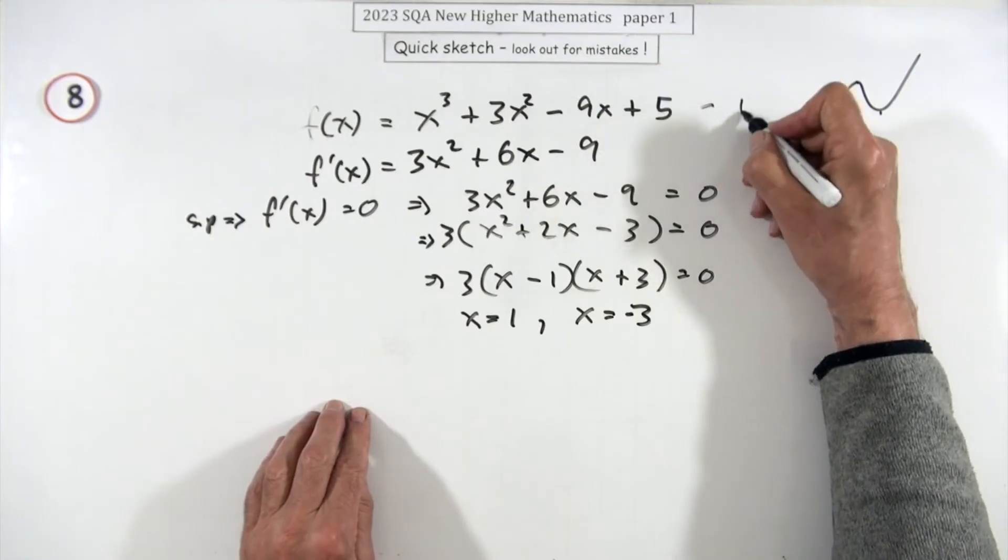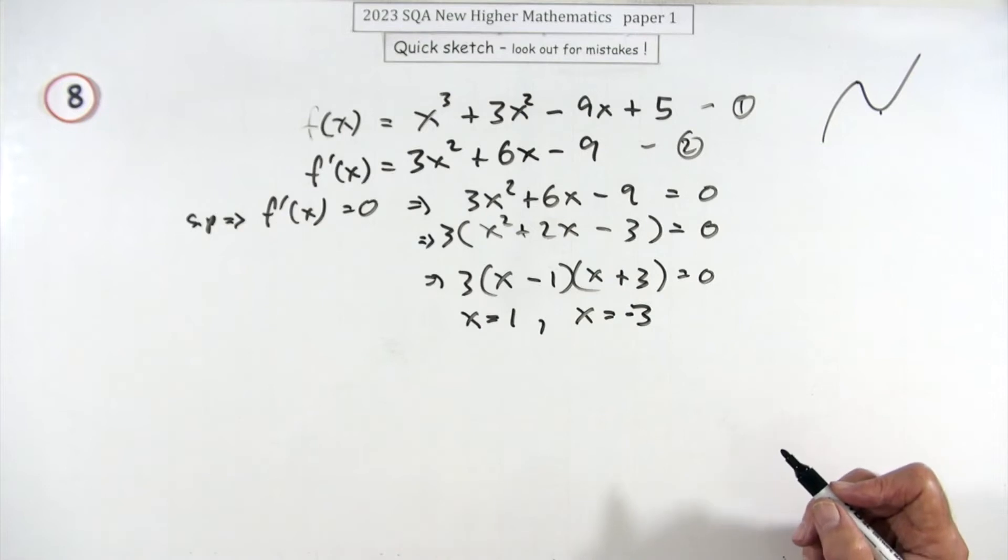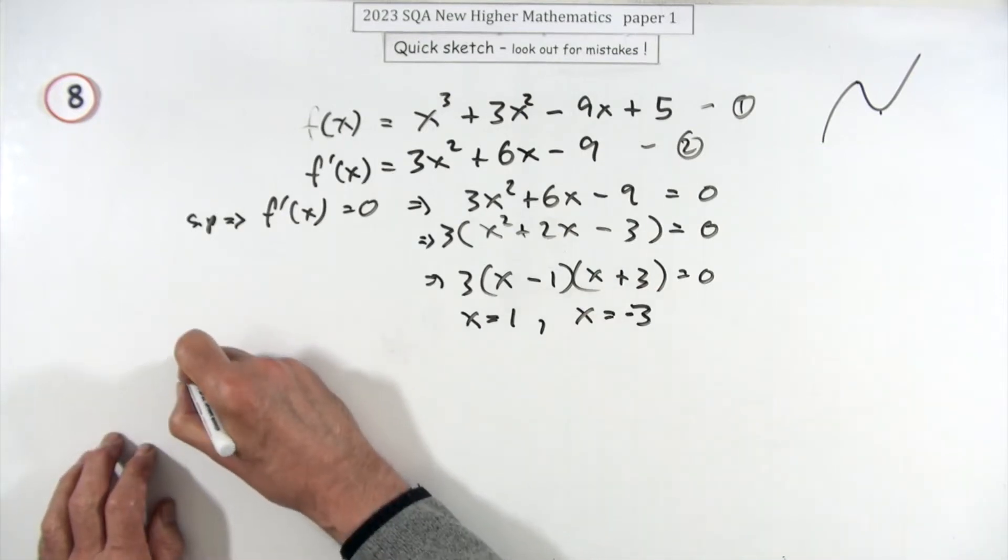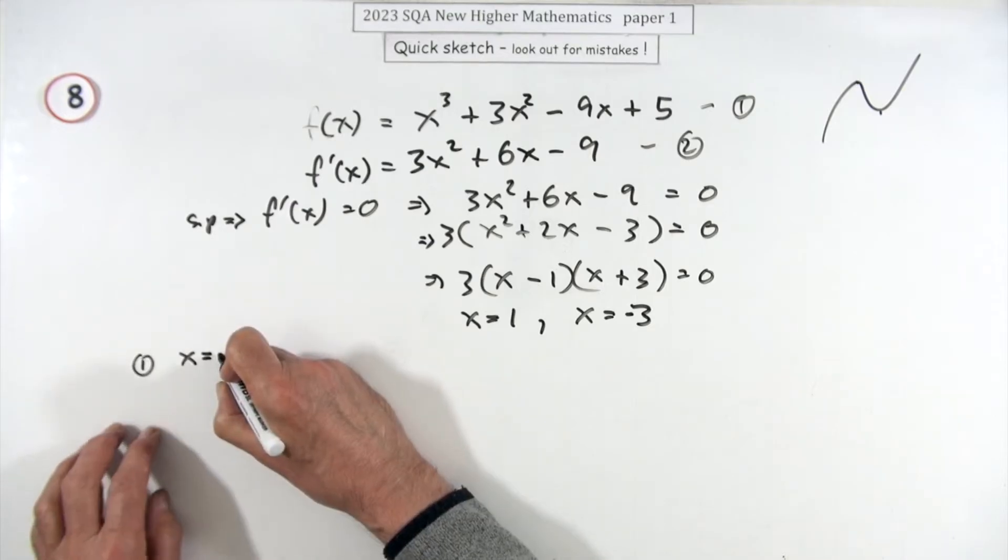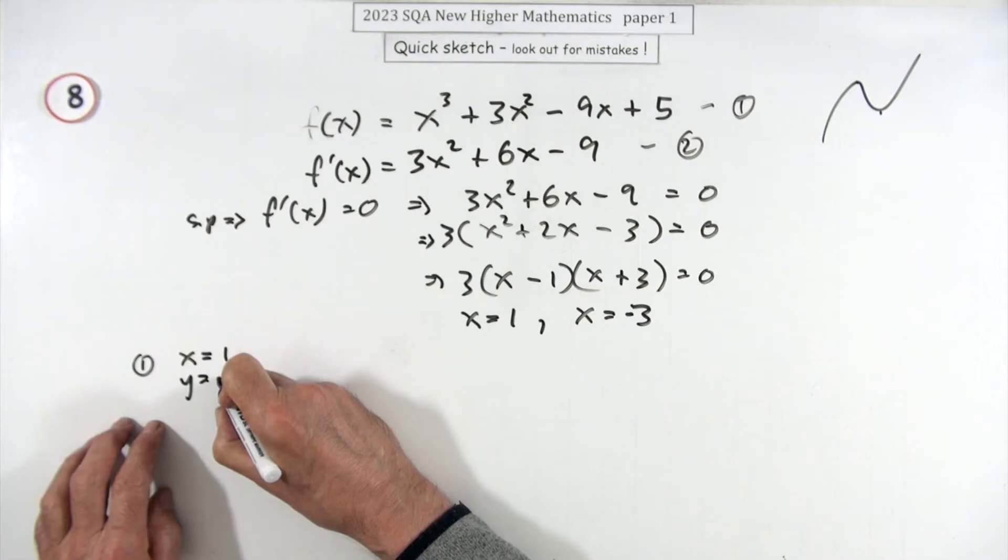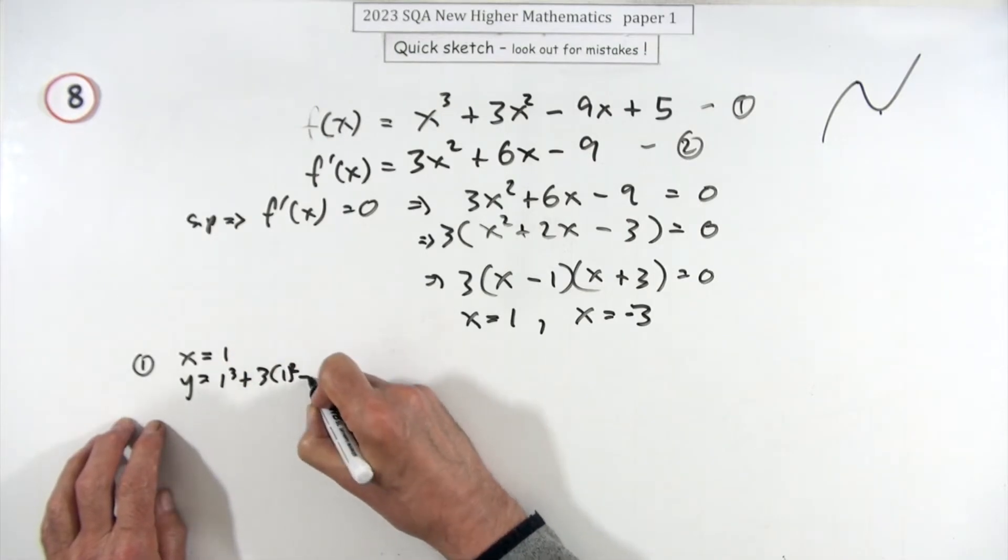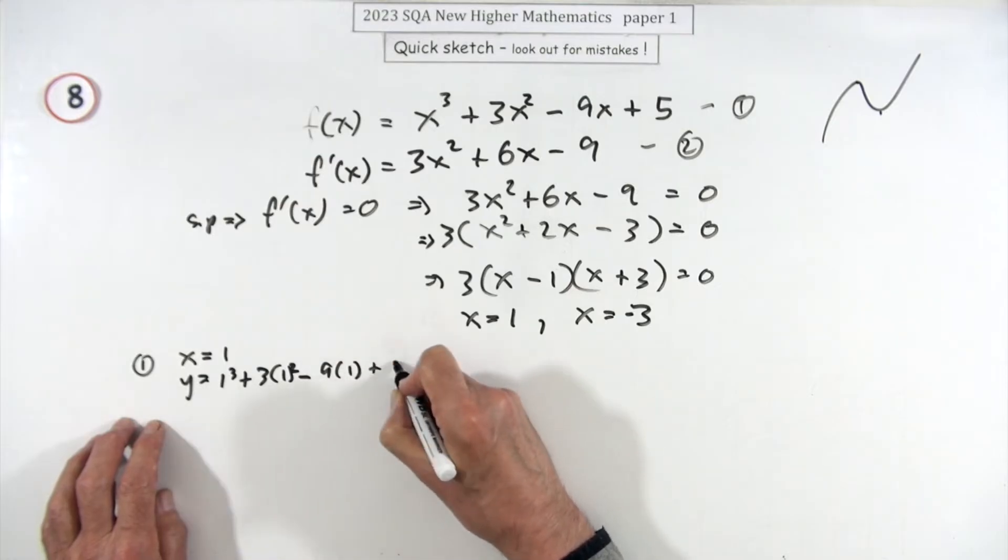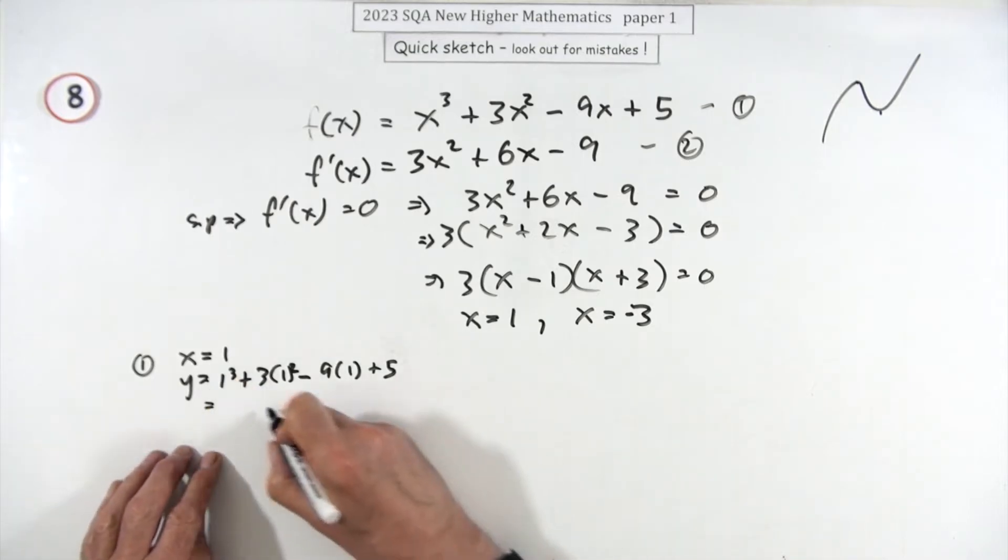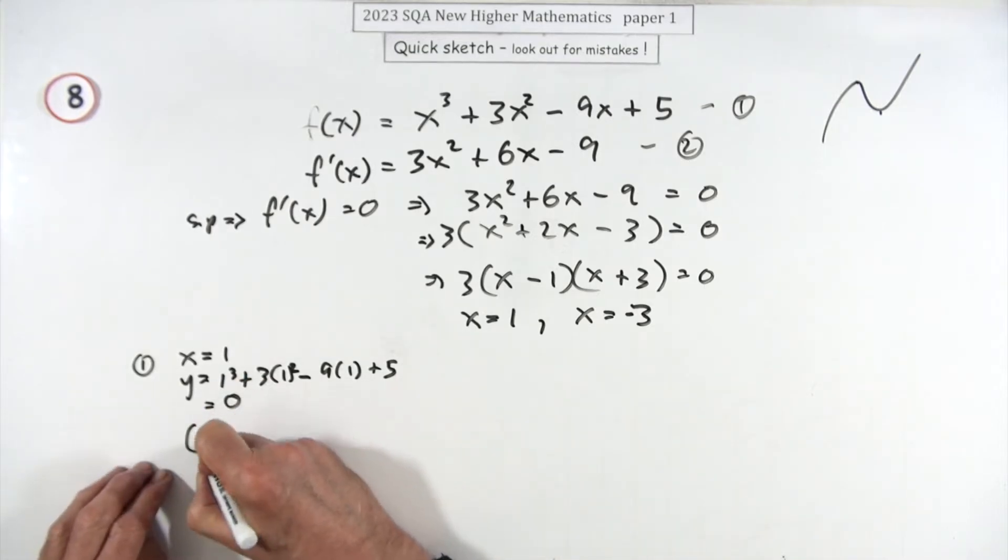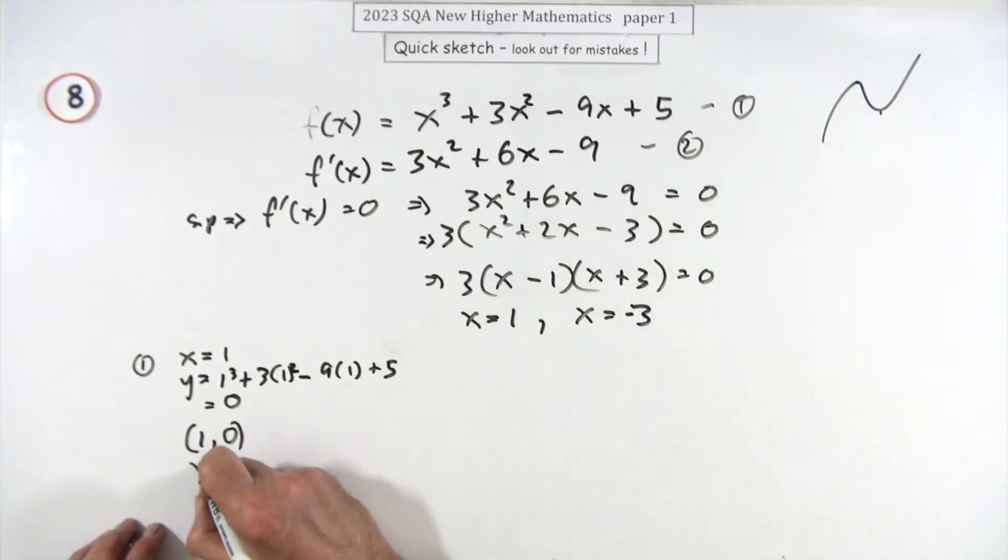So that'll be negative three, that's the maximum; that'll be one, that's the minimum. But you need the coordinates, so using equation one, if x equals one, then y will be one cubed plus three times one squared minus nine times one plus five. Those ones don't make any difference: that's just zero.